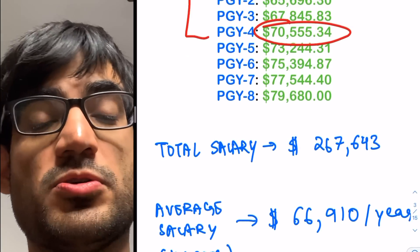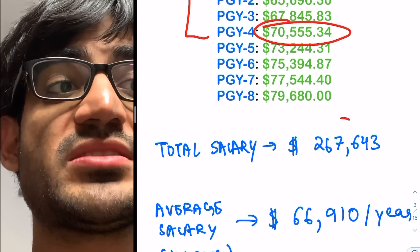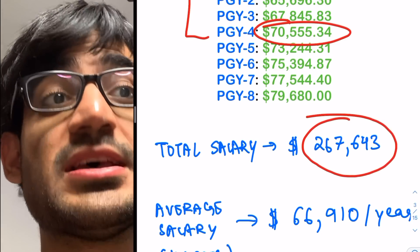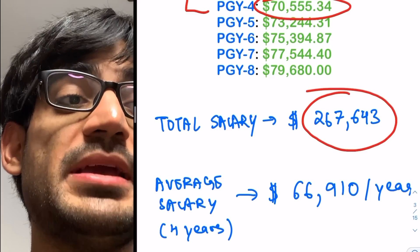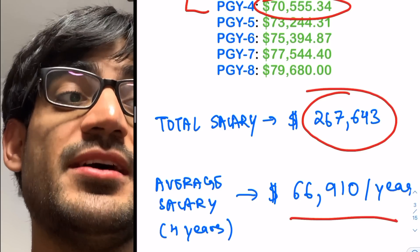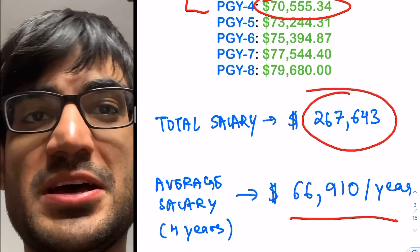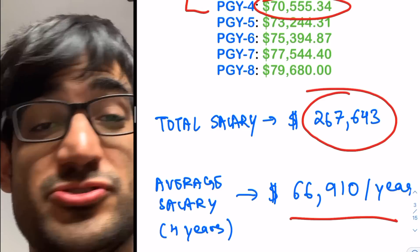So in total, in all my four years, I'll be making close to about $267,643 when you combine all of them. So my average salary for four years would be $66,910 per year, so about $67,000 per year. That's actually pretty great. I am pretty happy with that.